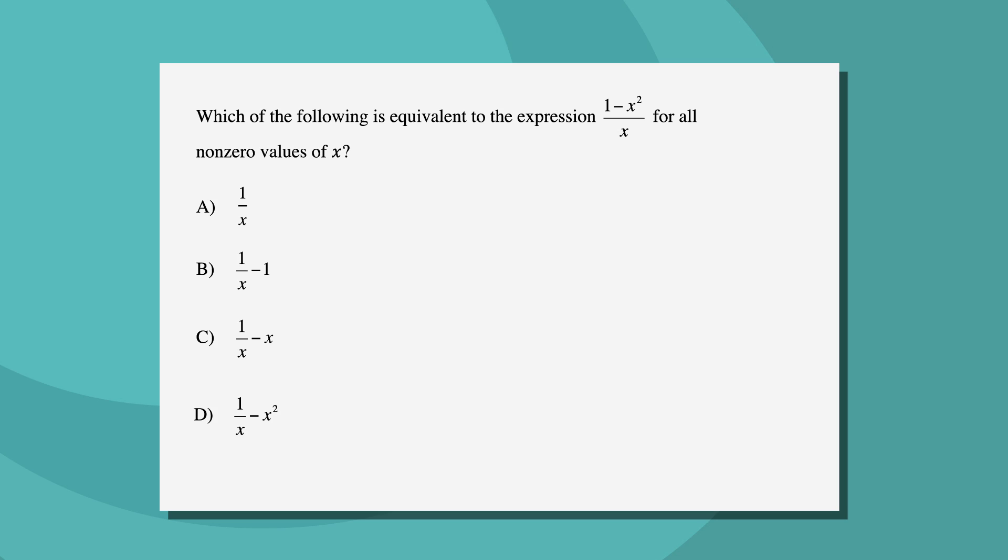Which of the following is equivalent to the expression 1 minus x squared over x for all nonzero values of x? All of the answer choices show math expressions with fractions and the variable x. The best time to use the Picking Numbers strategy is when you have variables in the question and in the answer choices.